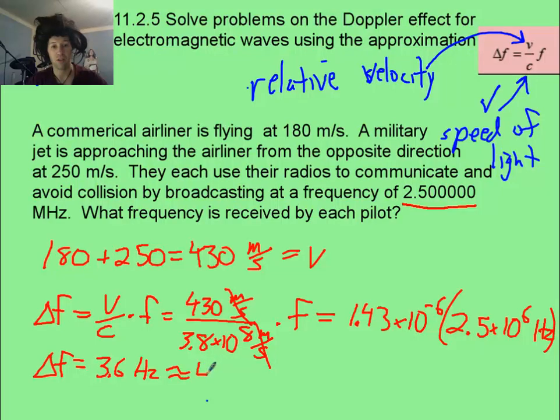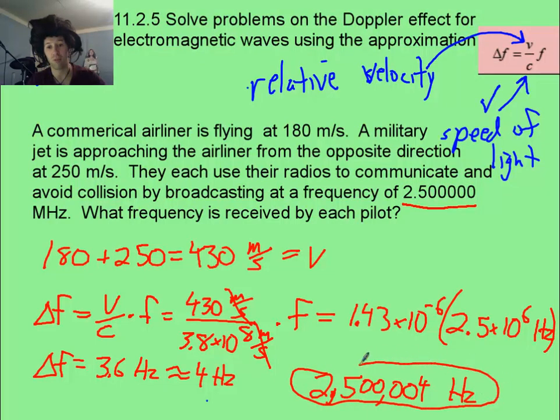Now, our delta F is going to be only about 3.6 hertz. So let's round that to just 4 hertz is our change. And so they're going to hear a higher frequency, because that's going to be a positive delta F, because they're going towards each other. So they will actually pick up on their sensors a 2,500,004 hertz signal, as opposed to just the 2,500,000 hertz that they heard before.